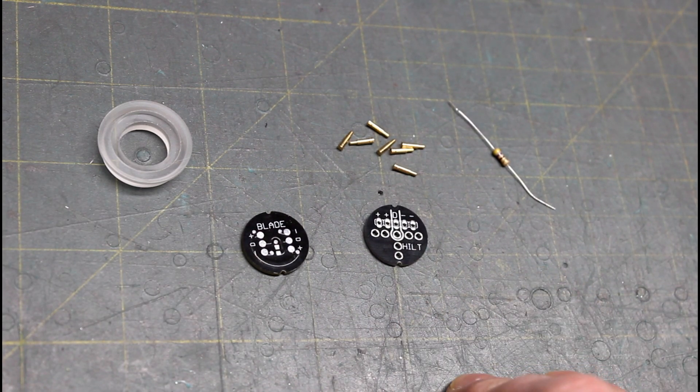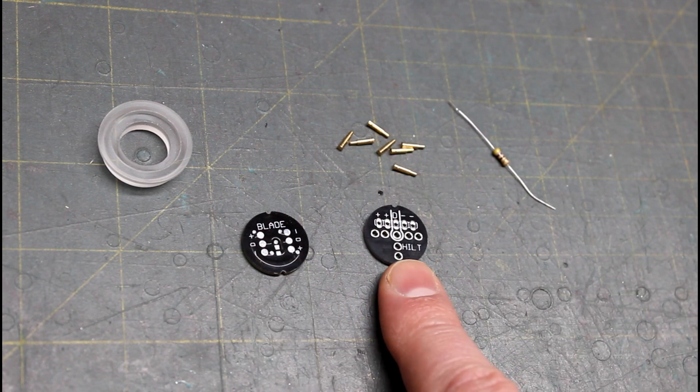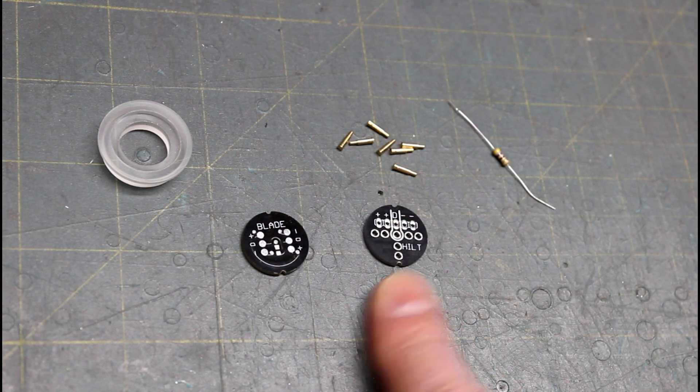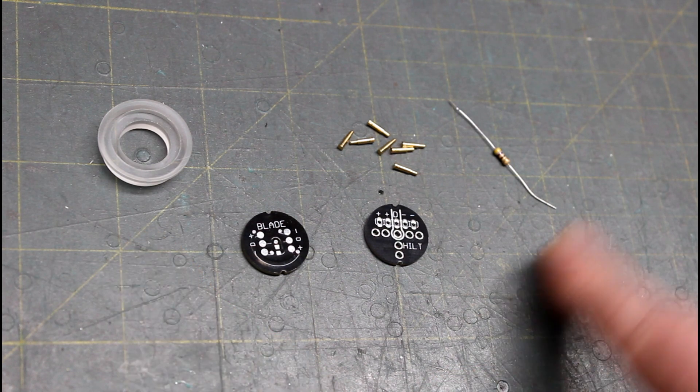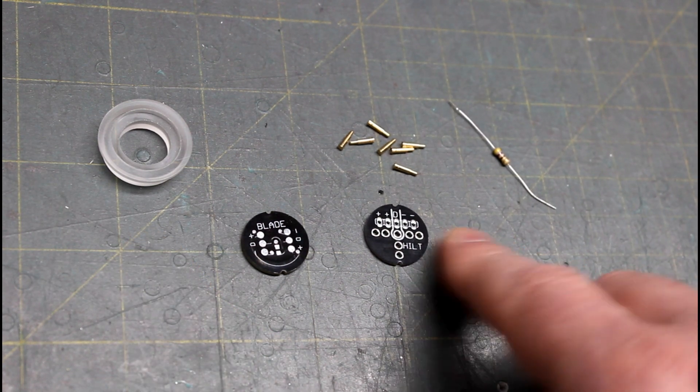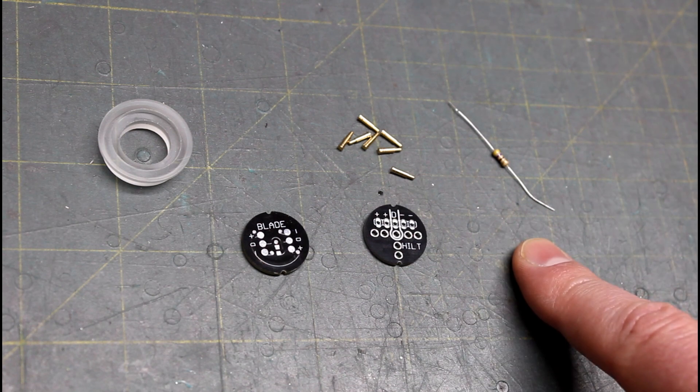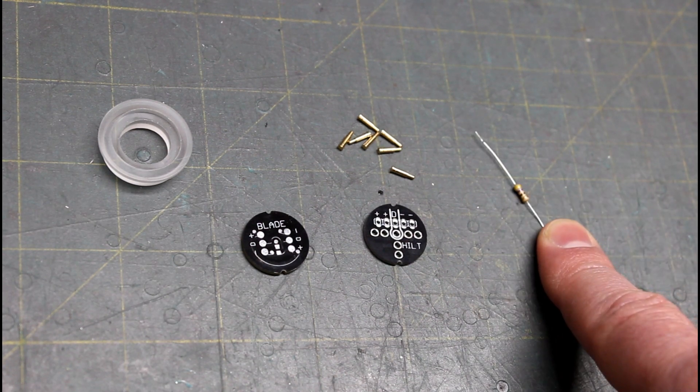I'm not going to be doing a whole NeoPixel build, just showing you how to wire up these two PCBs. I'm going to be using the blade adapter. Of course, you'll need whatever hilt side adapter. Your set will come with the two PCBs and the little spring pins.